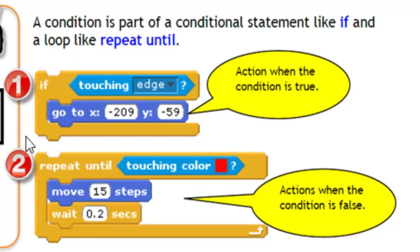There are two types. The first one is the if statement. If touching edge, go to x negative 209, y negative 59. And this means that if this is true, then take this action. As you can see here.